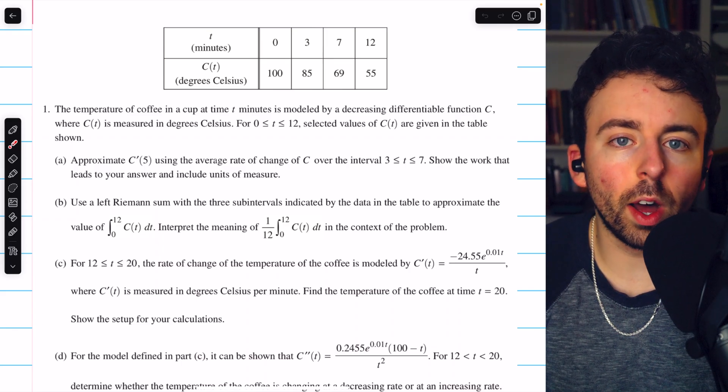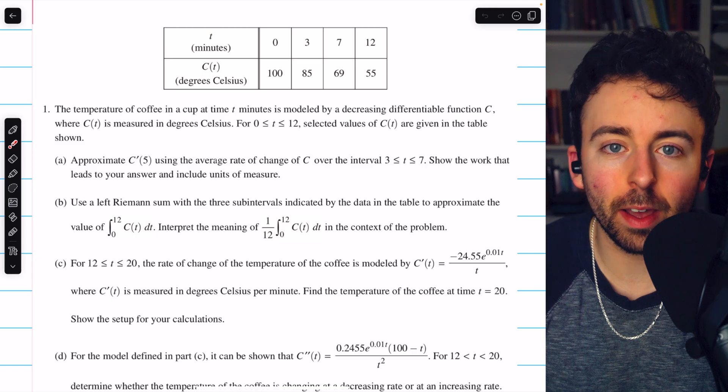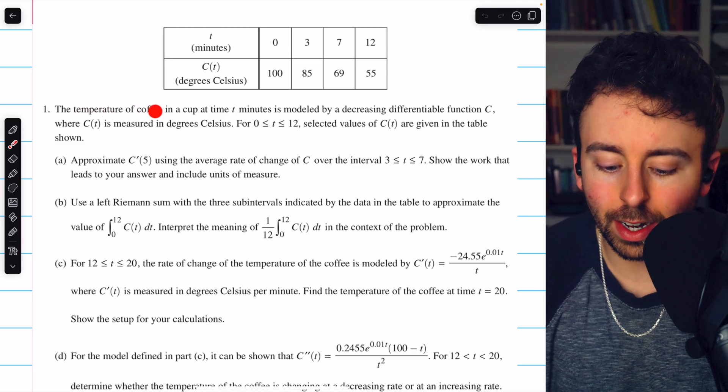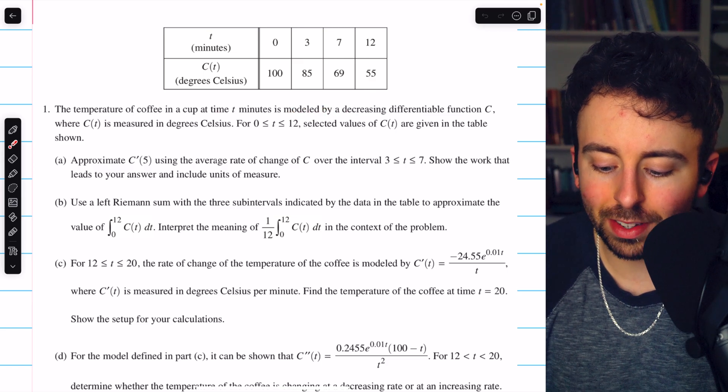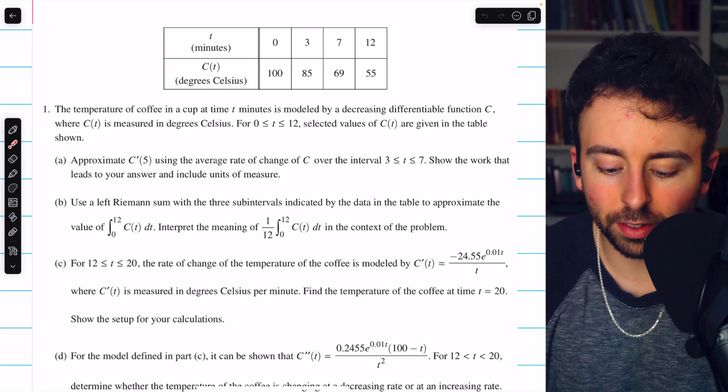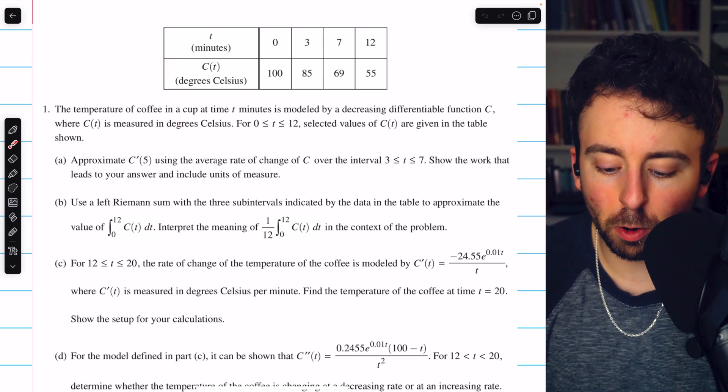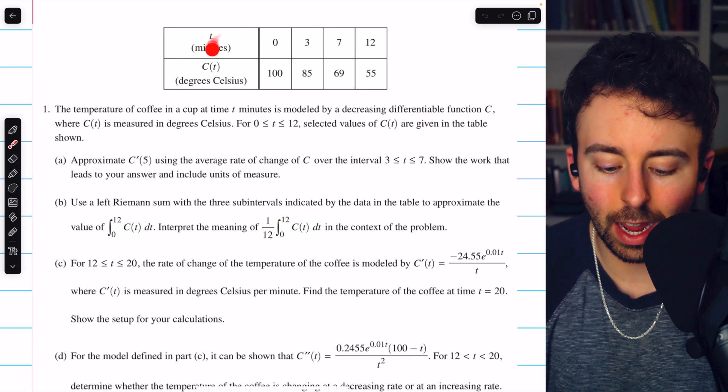This is free response question one from the 2024 AP Calc AB exam. The temperature of coffee in a cup at time t minutes is modeled by a decreasing differentiable function c, where c of t is measured in degrees Celsius. For t between 0 and 12, selected values of c of t are given in the table shown.